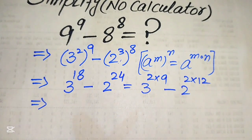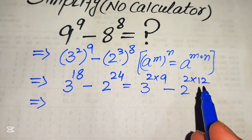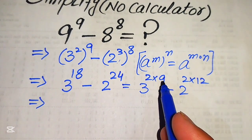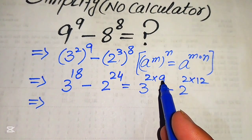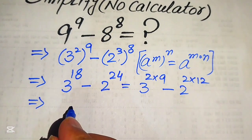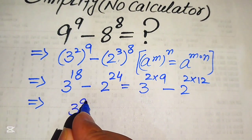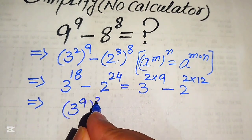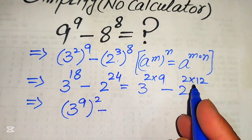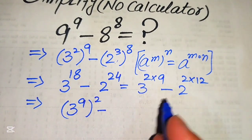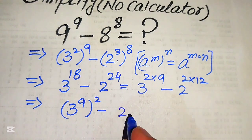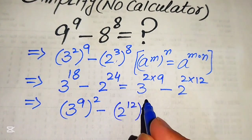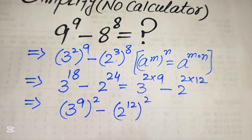We again apply the exponent law and move the 9 inside the term, giving us 3 to the power of 9, all squared. Similarly, we move the 12 inside, giving 2 to the power of 12, all squared. So our expression is now (3^9)² minus (2^12)².